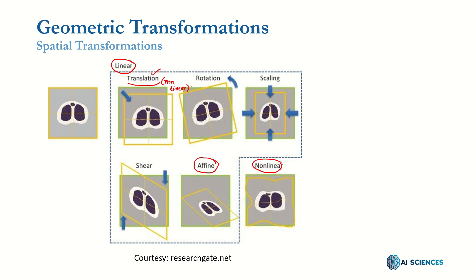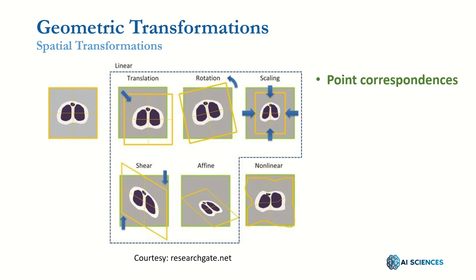Let me now discuss some of the applications of these transformations. There are a lot of applications — let me discuss just a few. One is to establish point correspondences. Consider you have two images — for example, this image and another image, maybe a scaled or rotated variant of the same image.